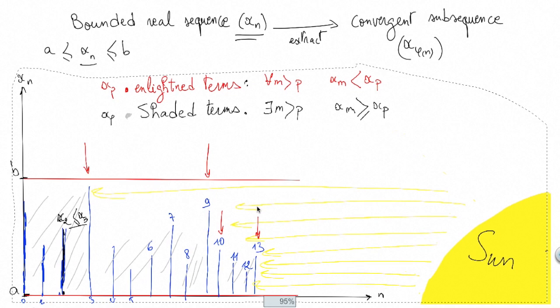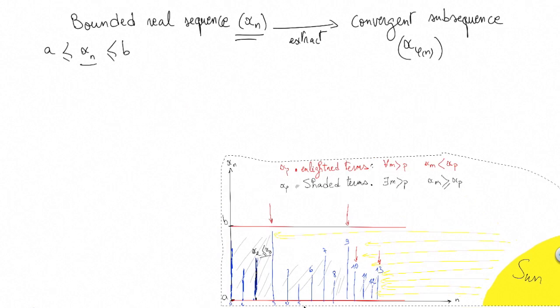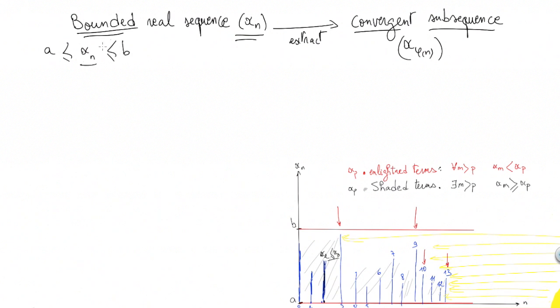The existence of these two categories gives us an important consequence. We want to extract a convergent subsequence. We know that the sequence is bounded, which would be the case for any subsequence. Thus, if we are able to extract a monotone subsequence, decreasing or increasing, we would have a convergent subsequence.